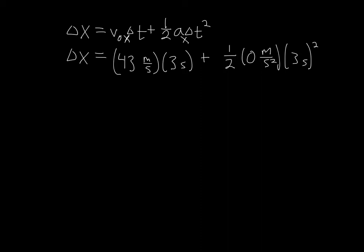So I can look at my units right away. I can see that my meters per seconds, the seconds in that portion cancels with the seconds in the time portion. Then I have seconds squared, which is going to cancel with these seconds squared. So all my units are going to work out to give me meters, which is excellent, because that's what the distance is measured in. And then I can just multiply my numbers out and find my change in x is equal to 129 meters.